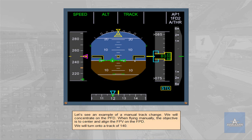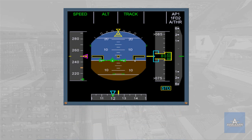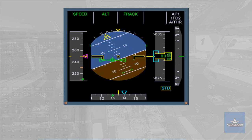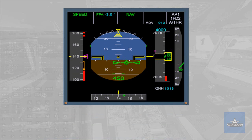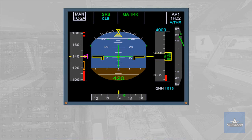Let's see an example of a manual track change. We will concentrate on the PFD. When flying manually, the objective is to center and align the flight path vector on the FPD. We will turn onto a track of 140. The FPD commands a roll to turn onto the selected track. The aircraft is rolled until the flight path vector and FPD are aligned. Approaching track 140, the FPD demands a roll to level the wings. When in track and flight path angle, the FPD reverts to flight director bars in case of go-around.